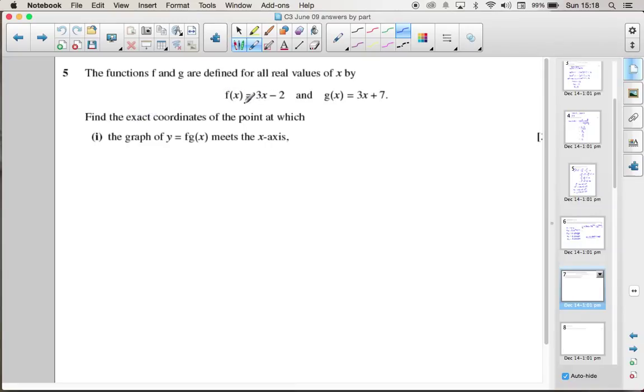Question 5 is a composite functions question. We've got f of x is 3x minus 2 and g of x is 3x plus 7. And we need to find where the graph of f of g of x would meet the x-axis.